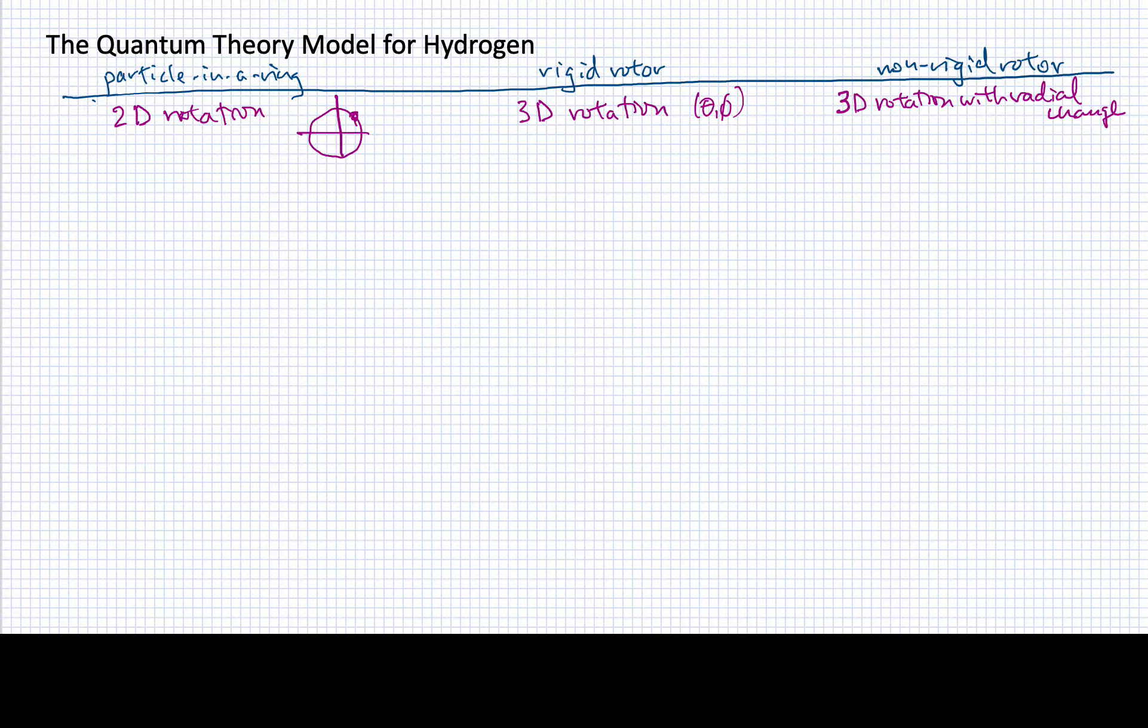We're now going to look at a non-rigid rotor where we have rotation going on in three dimensions, but we also allow for some change in the radial coordinate.